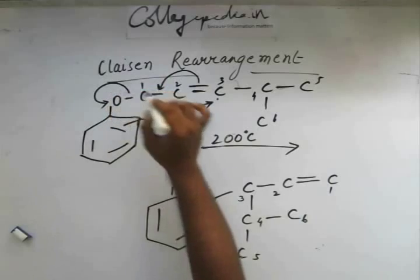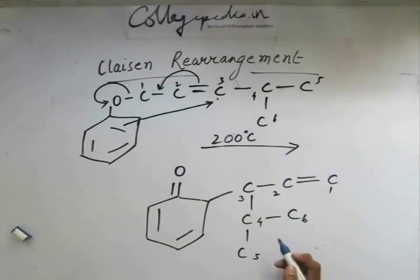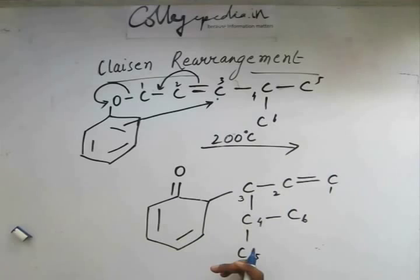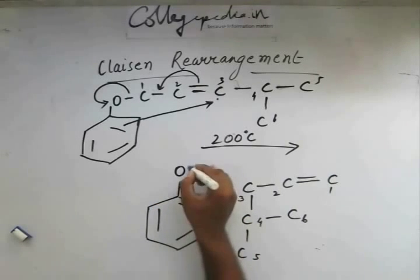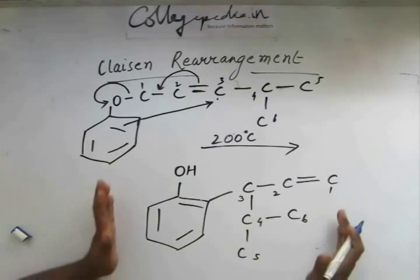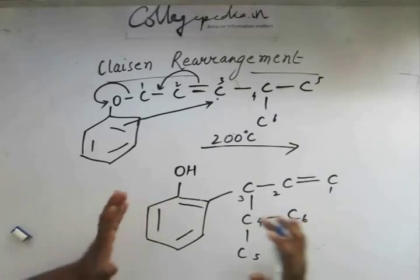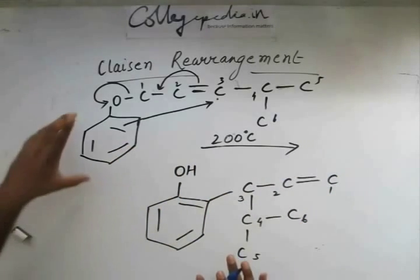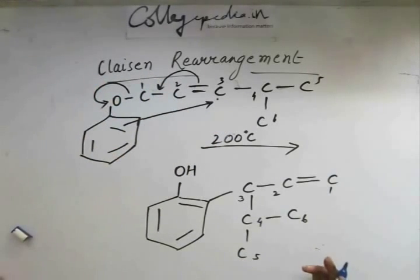It doesn't really matter what groups are attached. The double bond of the benzene structure will attack the allylic position, which is the C3 position here — the double bonds are rearranged in a simple fashion. This keto form will rearrange itself to the enol form, giving us allylphenol as our product from the aryl-allyl ether. This is what Claisen rearrangement is.